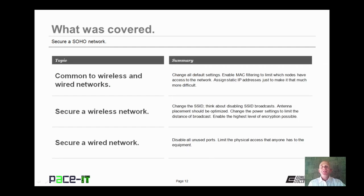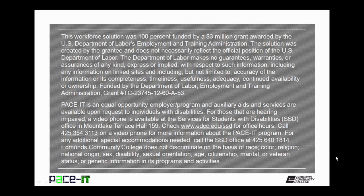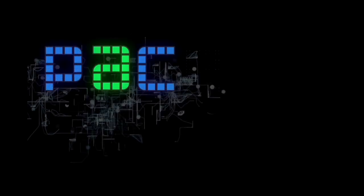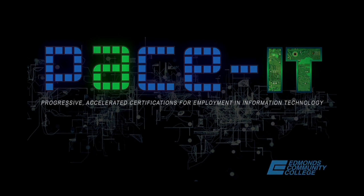That concludes this session on how to secure a small office home office network. We talked about security measures common to both wired and wireless networks, then wireless network security, and then some things you could do to help secure your wired network. On behalf of PACE IT, thank you for watching this session, and I'm sure we'll do some more soon. Thank you.